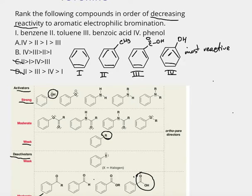After phenol, we have toluene, which has the CH3 group. The CH3 group is also activating, just not as strongly. It's a weak activator. So after four, we must go to two.